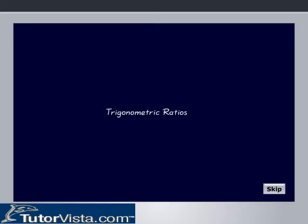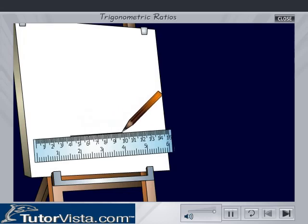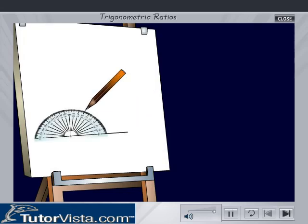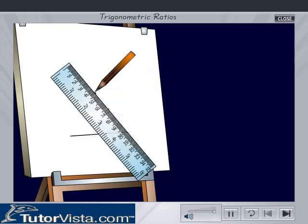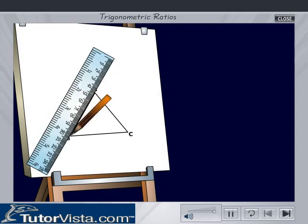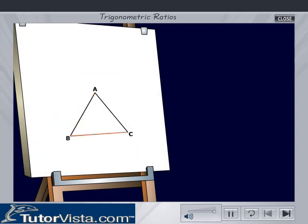Trigonometric Ratios. Draw an equilateral triangle ABC where AB is equal to BC is equal to CA is equal to A, and each angle is equal to 60 degrees.